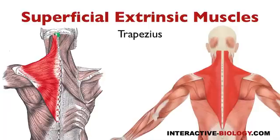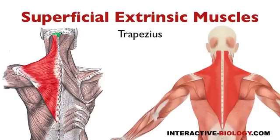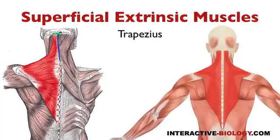From the external occipital protuberance, we have the superior nuchal line that radiates out from it. But the trapezius does not originate from the entire superior nuchal line — it's actually just the medial third of the superior nuchal line. There's also a ligament called the nuchal ligament that projects down to C7, and that is part of the origin of trapezius.